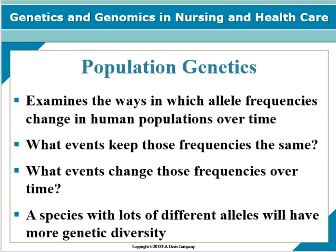Population genetics examines the ways in which allele frequencies change in human populations over time — what events keep those frequencies the same, and what events change them. A species with lots of different alleles will have more genetic diversity. The main purpose of population genetics is determining the factors that allow allelic frequencies to change over time. Population genetics is important because disease risk can vary as a result of the geographic origin of one's ancestors.